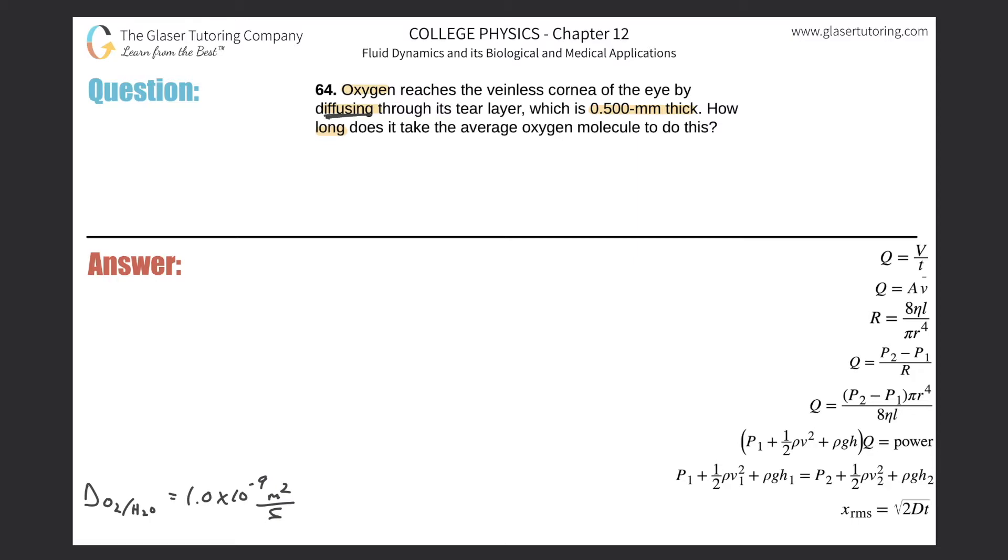The tear layer we're going to assume is mostly water. So the question is asking us how long does it take for oxygen to diffuse through a half of a millimeter thick layer of water, and in order to do this we need to have a diffusion formula.